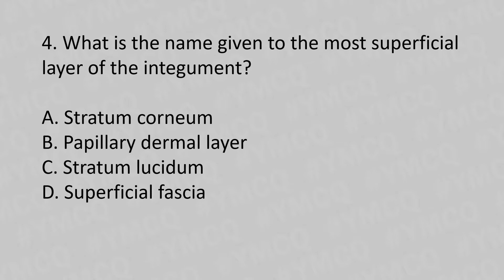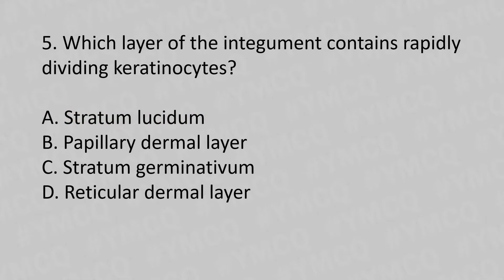Question 4: What is the name given to the more superficial layer of the integument? Option A: stratum corneum. Option B: papillary dermal layer. Option C: stratum lucidum. Option D: superficial fascia. The answer is Option C: stratum lucidum.